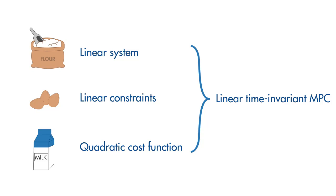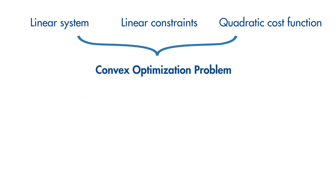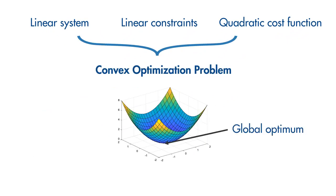An MPC problem that has these nice properties gives rise to a convex optimization problem where the cost function has a single global optimum and the goal of the optimization is to find the problem and you can use many types of numerical methods and software to solve it.